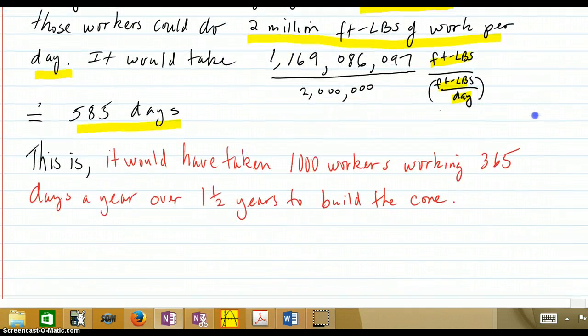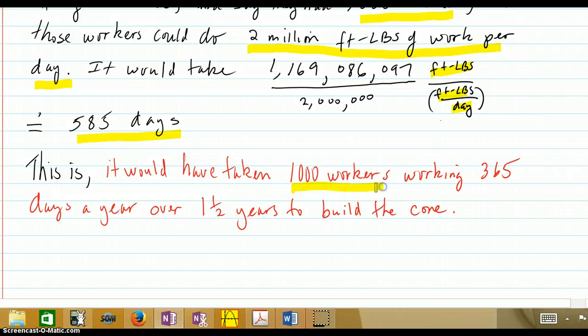So that all works out to 585 days, meaning that it would have taken 1,000 workers, if they had that many, working every day without holiday over one and a half years to build the cone. So that gives you an idea of the massive effort that would take.